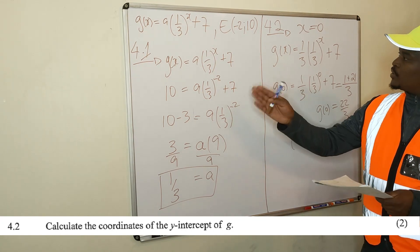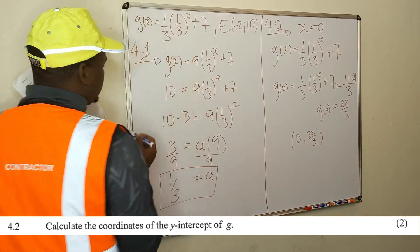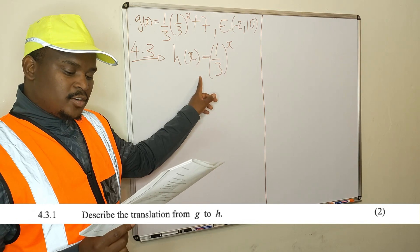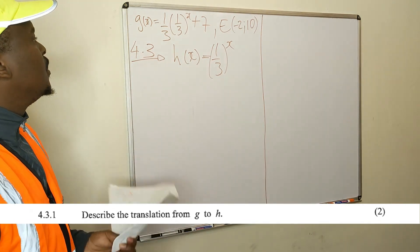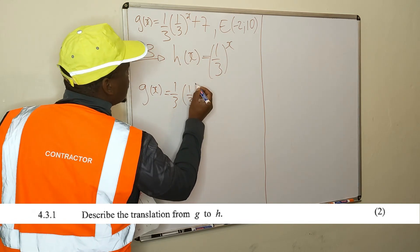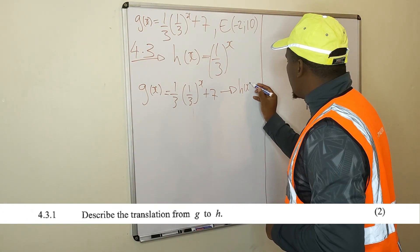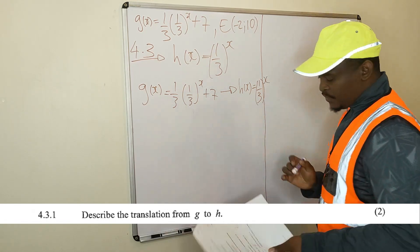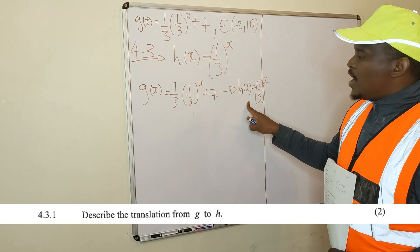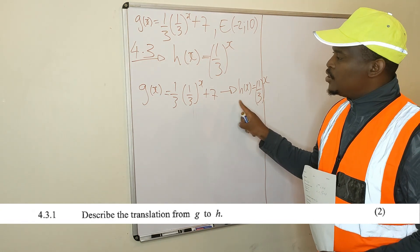Let's go to 4.3. Your a is 1/3. You are asked to describe the translation from g of x to h of x. You are given g of x equals (1/3) times (1/3) raised to x, plus 7. This g of x is translated to h of x, which is just (1/3) raised to x. They are asking how this thing is moved to get from g to h.